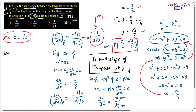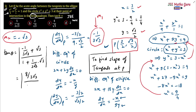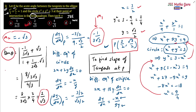Now using the angle formula tan θ = |(m1 - m2) / (1 + m1·m2)|, substituting m1 = -1/(3√3) and m2 = -√3: the numerator simplifies to 8/(3√3) and the denominator to 4/3. So tan θ = 8/(3√3) × 3/4 = 2/√3. Therefore tan theta = 2/√3, which corresponds to option B.